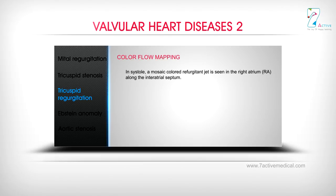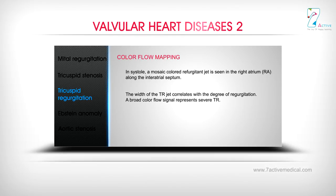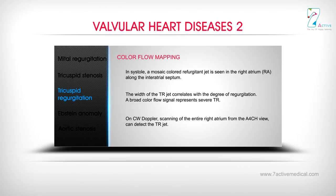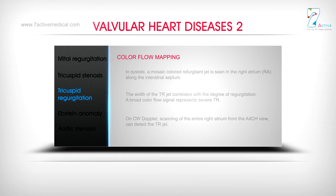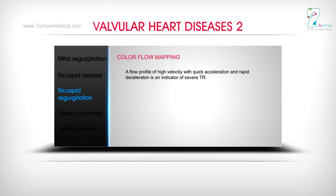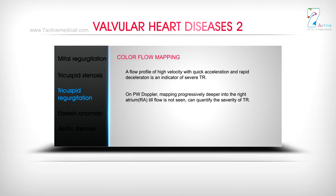Colour Flow Mapping: In systole, a mosaic-colored regurgitant jet is seen in the right atrium along with the interatrial septum. The width of the TR jet correlates with the degree of regurgitation — a broad color flow signal represents severe TR. On CW Doppler, scanning of the entire right atrium from the A4CH view can detect the TR jet. A flow profile of high velocity with quick acceleration and rapid deceleration is an indicator of severe TR.